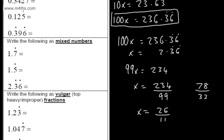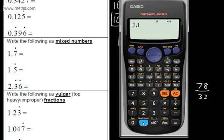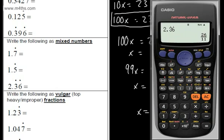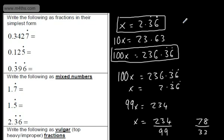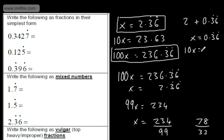If we put that in the calculator — entering 2 point and then the 3,6 recurring — there we go, 26 over 11. If you wanted to write that as a mixed number, I would be tempted to split it up and simply say that's going to be 2 plus 0.36 recurring, and just deal with the 0.36. So x is equal to 0.36 recurring. We know 10x equals 3.63 and so on, then 100x is equal to 36.36, and we've got our recurring pattern.